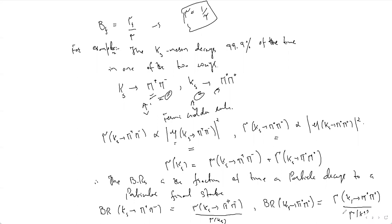Therefore, the branching ratios represent the fraction of the time a particle decays to a particular final state. The branching ratio of KS→π+π− equals Γ(KS→π+π−) / Γ(KS), and the branching ratio of KS→2π⁰ equals Γ(KS→2π⁰) / Γ(KS). If the lifetime is given, you can calculate the decay width and easily find out the branching ratios.